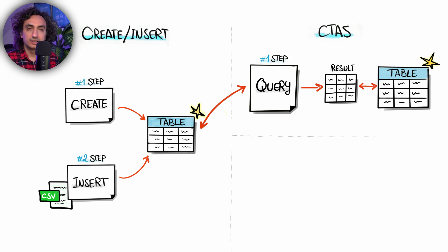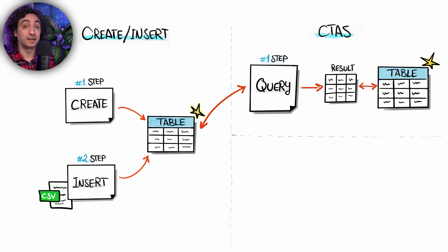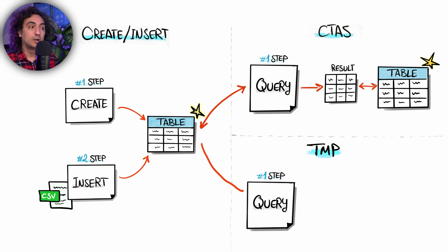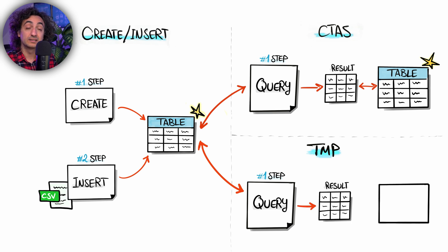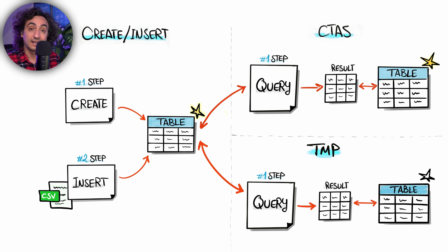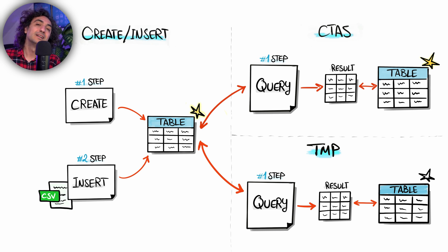We learned with CTEs we could use a query to retrieve data from one table and put the intermediate results into a brand new table in the database. The same thing applies for temporary tables — we have a query that retrieves data from a table, and the database creates a new table with the structure and data from the result of that query. So it is exactly like CTEs.